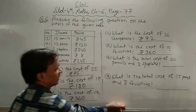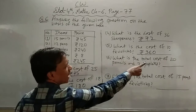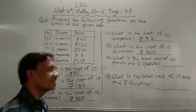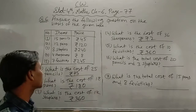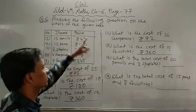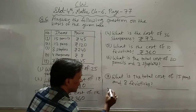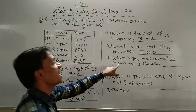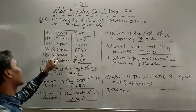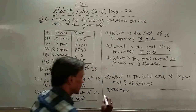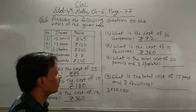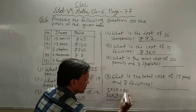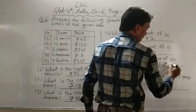Next question 6: What is the total cost of 20 pencils and 3 staplers? Students, पहले 20 pencil का cost: एक pencil का cost 3 rupees, तो 20 pencil का cost 3 into 20 = 60 rupees। और 3 staplers: एक stapler की cost 30 rupees, तो 3 staplers की cost 3 into 30 = 90 rupees। Total add करो: 60 + 90 = 150 rupees।